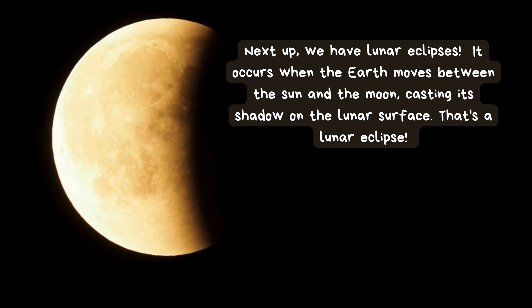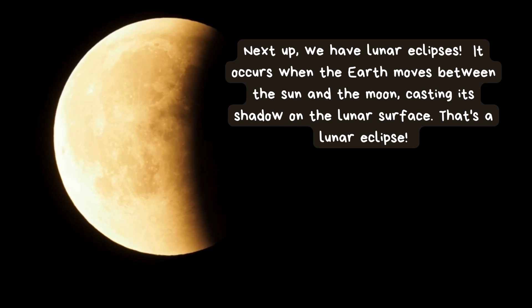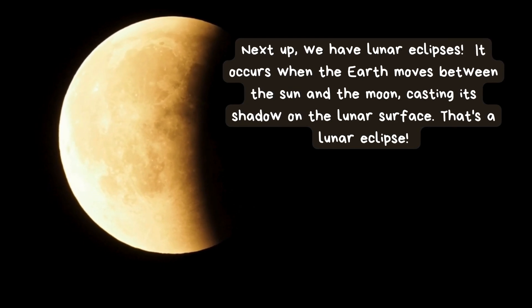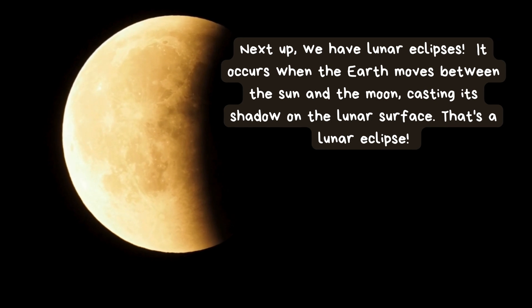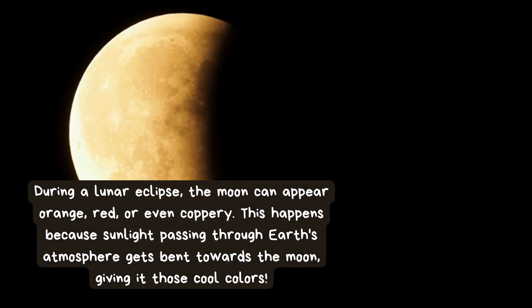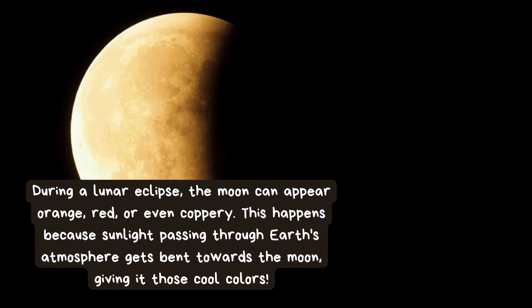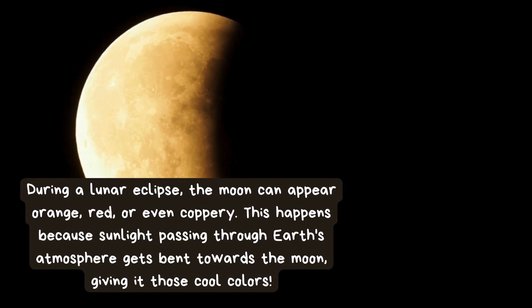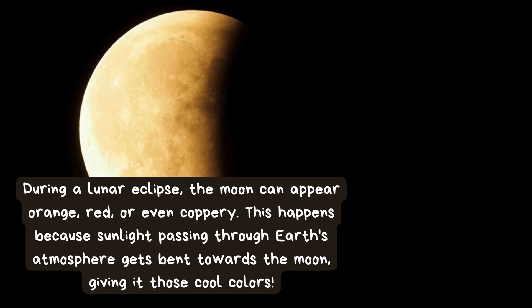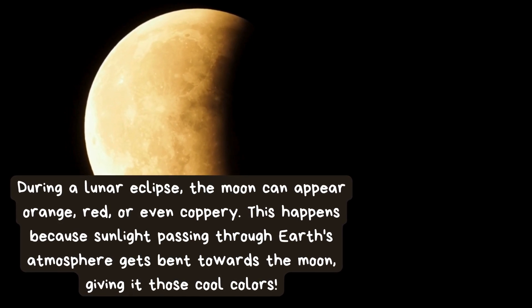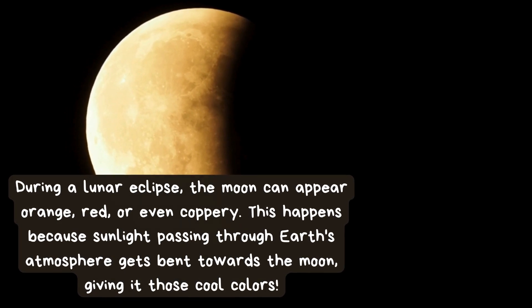Next up, we have lunar eclipses. A lunar eclipse occurs when the Earth moves between the sun and the moon, casting its shadow on the lunar surface. During a lunar eclipse, the moon can appear orange, red, or even coppery. This happens because sunlight passing through Earth's atmosphere gets bent towards the moon, giving it those cool colors.